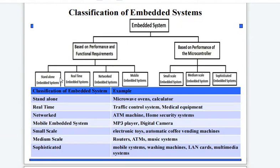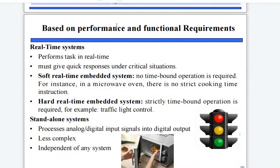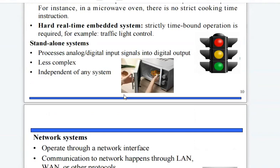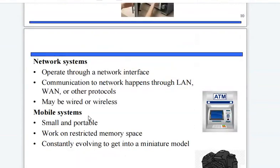Based on performance and function requirements, embedded systems are divided into four types: standalone, real-time, network, and mobile embedded systems. Based on performance of the microcontroller, they are divided into three types: small scale, medium scale, and sophisticated embedded system. The table shows the classification of embedded systems with their examples.